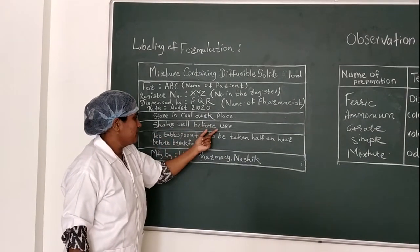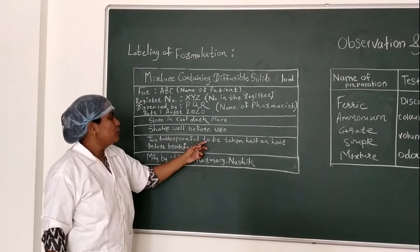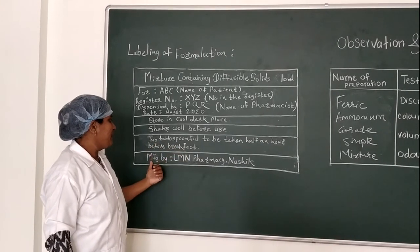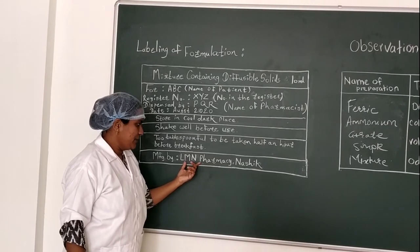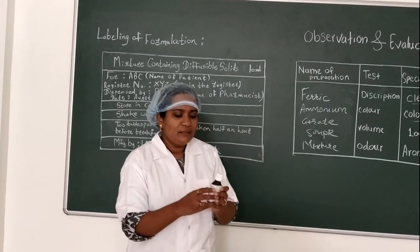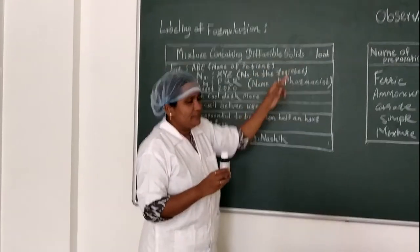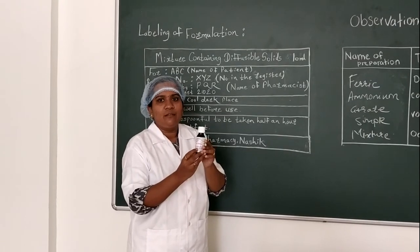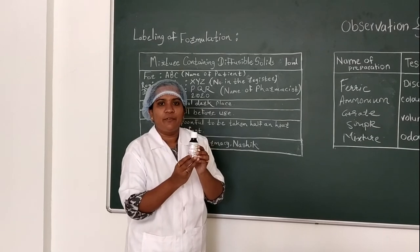Direction on the label: 'Shake well before use.' Additional direction: two tablespoons to be taken half an hour before breakfast. Manufactured by LML Pharmacy — here the name of the industry can be written. The 10 ml of mixture containing diffusible solid is submitted in a plain glass bottle, with the special instruction labelled as 'Shake well before use.' Thank you.